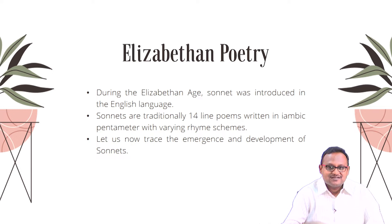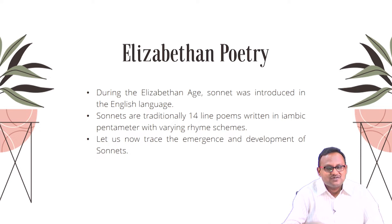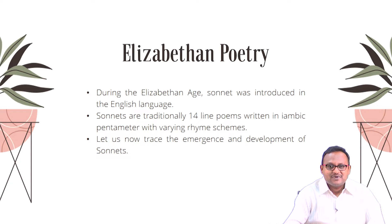We have discussed sonnets in great detail in earlier classes, including how to distinguish a Petrarchan sonnet from a Shakespearean sonnet. Generally a sonnet has 14 lines, though we have also discussed exceptions to this rule. There are 12-line sonnets called Kyrielle sonnets, and 16-line sonnets called Coda sonnets. Here we need to remember that sonnets were introduced at this particular juncture of time.